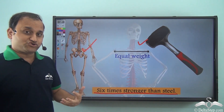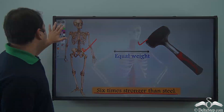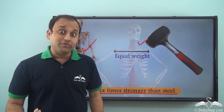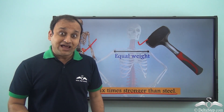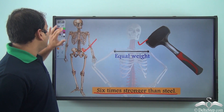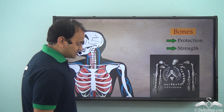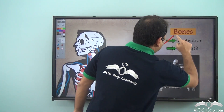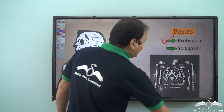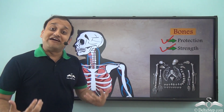So you see how strong bones are — that's why they are able to give a lot of protection and a lot of strength to our body. Two very important functions of bones are that they give protection to all the inner parts of the body, and they provide strength to the body.